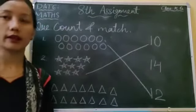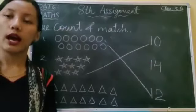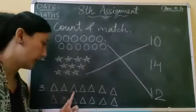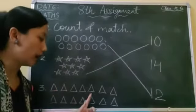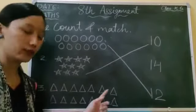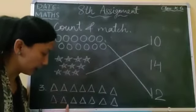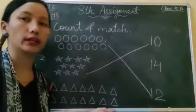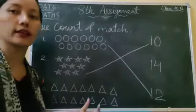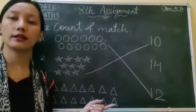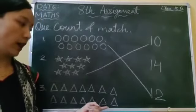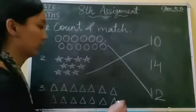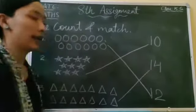Now last we have triangles. Let's count how many triangles are there. One, two, three, four, five, six, seven, eight, nine, ten, eleven, twelve, thirteen, fourteen. How many triangles are there? There are fourteen triangles. Now let's match these triangles to fourteen. Match, like this.